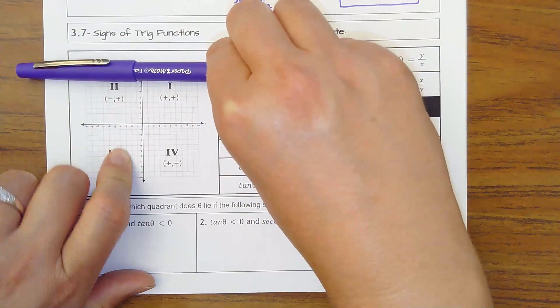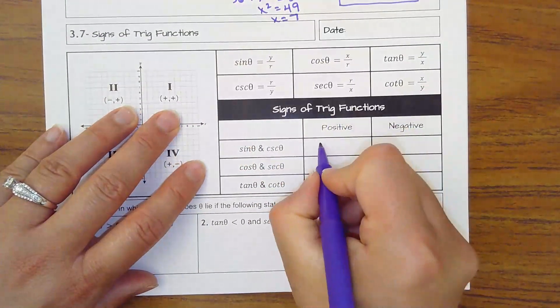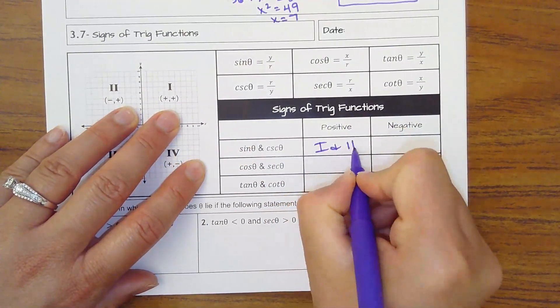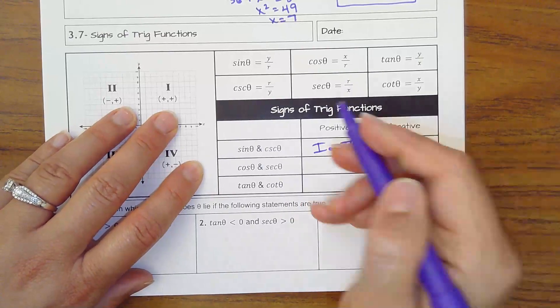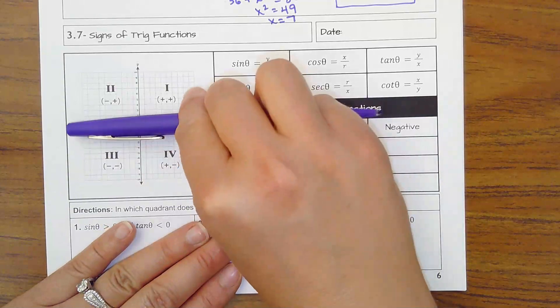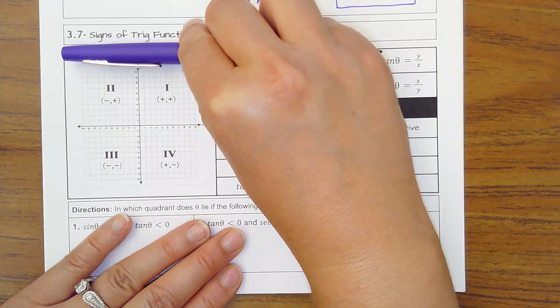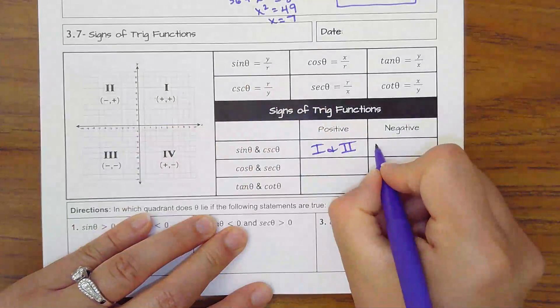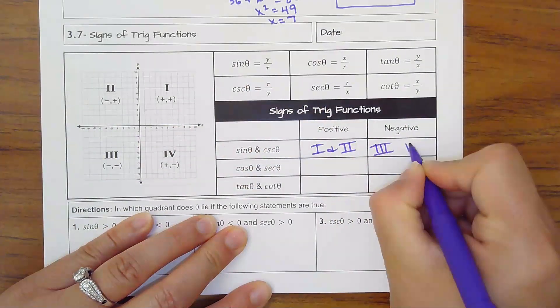And so sine would be positive where y's are positive, which is up, right? So quadrants 1 and 2 are where sine and cosecant are positive. So think sine and cosecant are y's, y's go up is positive. When they're down, they're negative, so negative in quadrant 3 and 4.